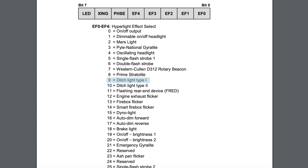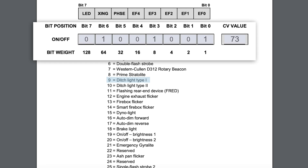Type 1 ditch light will stay on steady and will start to flash when the horn is blown. Type 2 ditch light stays off and then starts to flash when the horn is blown. We want Type 1, so we start with a value of 9. As we work through the charts, we see that we also want grade crossing logic, which tells the decoder to activate the flashing light effect when the horn is blown. So 9 plus 64 gives us a value of 73.